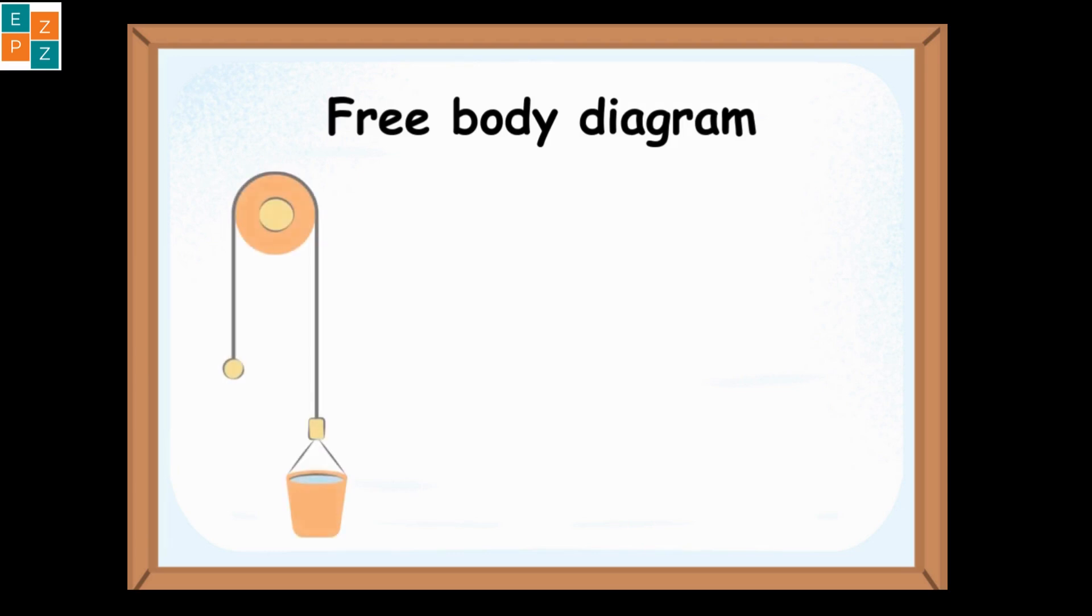Let's draw a free body diagram for a bucket being pulled up out of a well by a rope. So, in this scenario, the free body diagram would include two main forces: an upward force from the tension in the rope, and a downward force due to gravity.